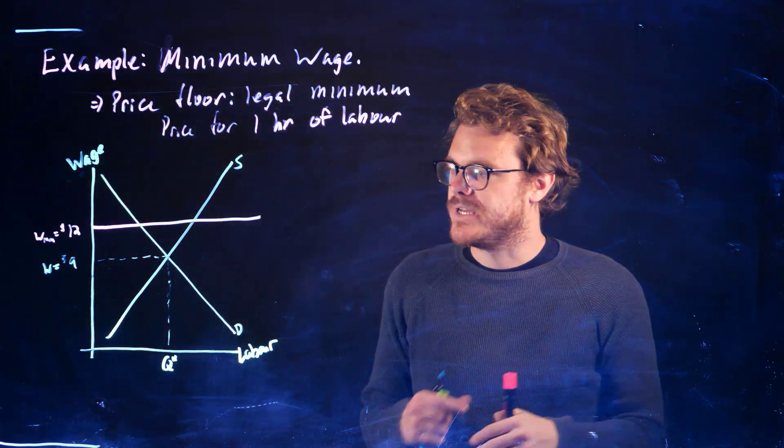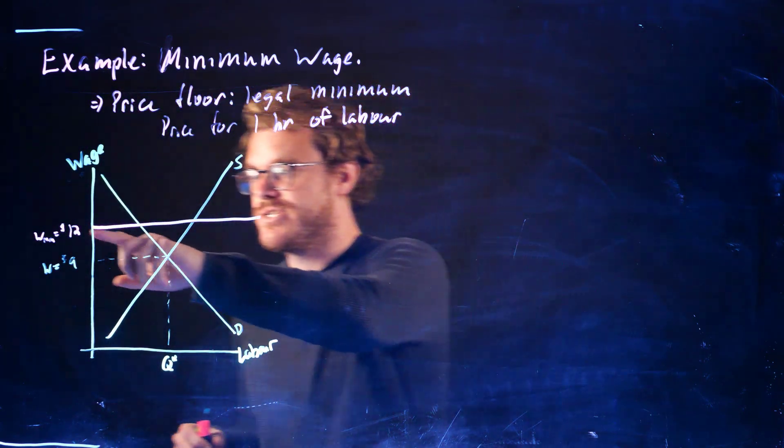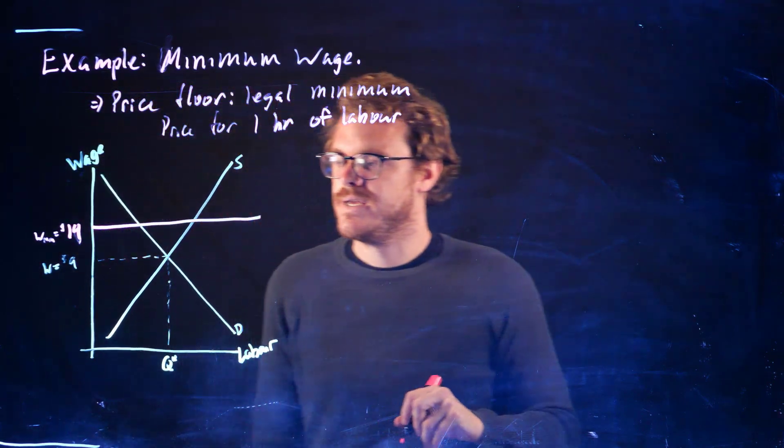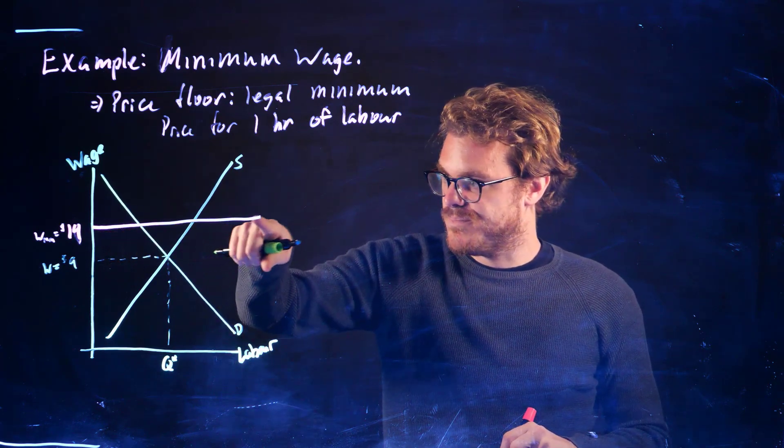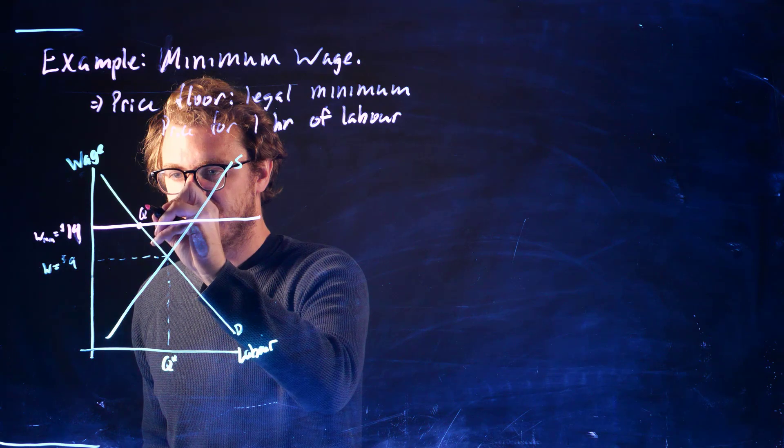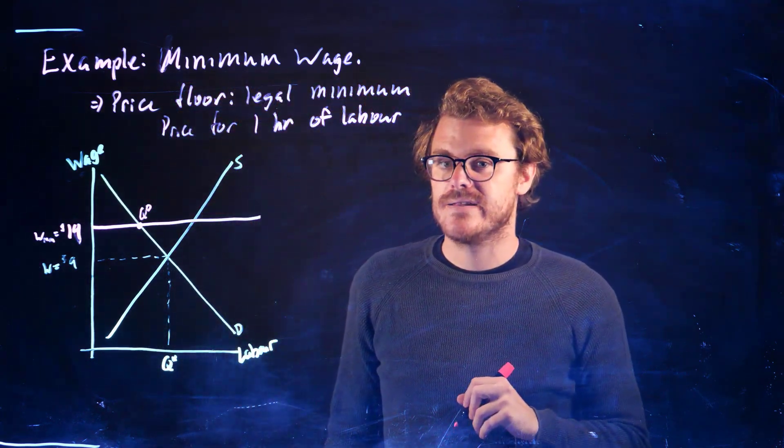I think it's 14 or something like that in Ontario right now, so maybe we should just change that to 14. At this price floor, this is how many - this is the quantity demanded of labor, so this is how much firms want to hire.